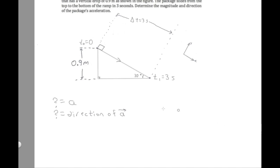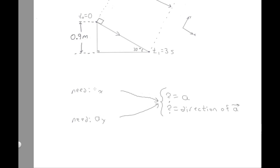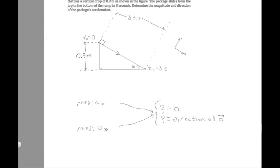So our plan is: to figure out the overall vector, we need the x and y components of acceleration. We can already figure out a_y, because the object is moving parallel to the x-axis and is therefore motionless in the y component. If the object is motionless in the y component, the y acceleration is zero. That's a simple number that will simplify our work.